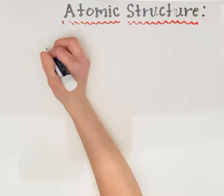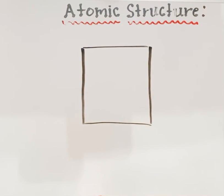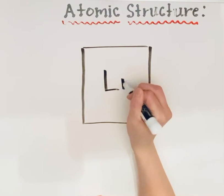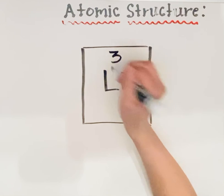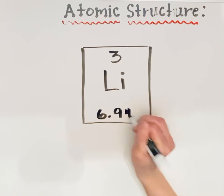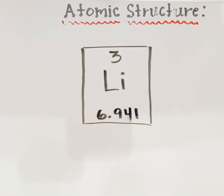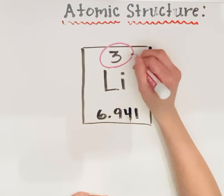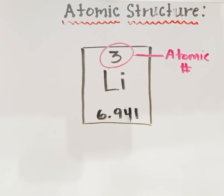This element card represents the element lithium. Each element card has the element symbol in the center, and then it has two numbers. One number for lithium is three, and then a second number at the bottom that is often a decimal. The top number is called the atomic number — each element has its own atomic number. The atomic number tells you the number of protons and also the number of electrons in any atom of a given element.